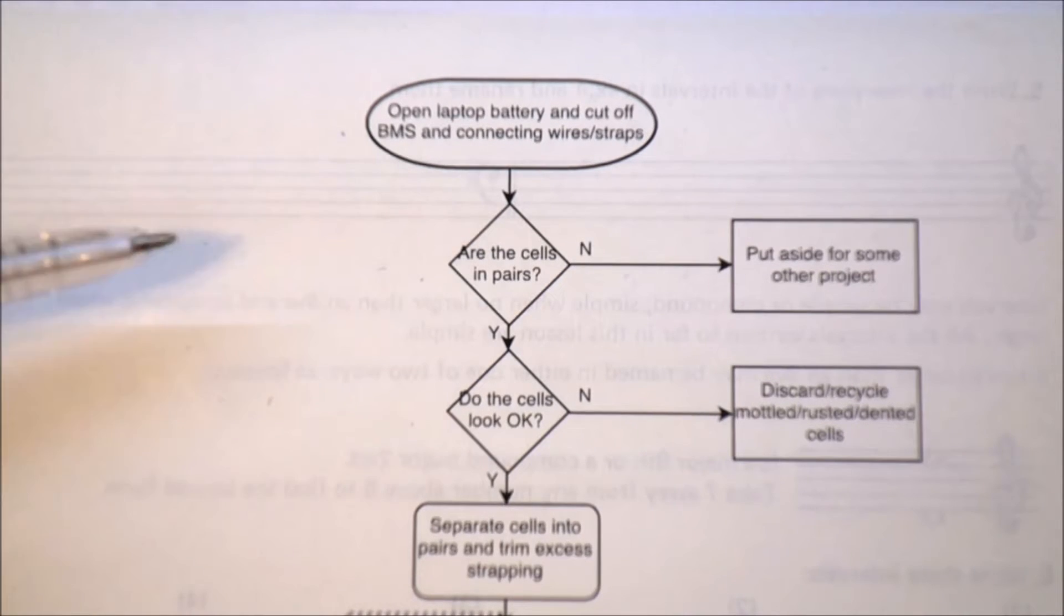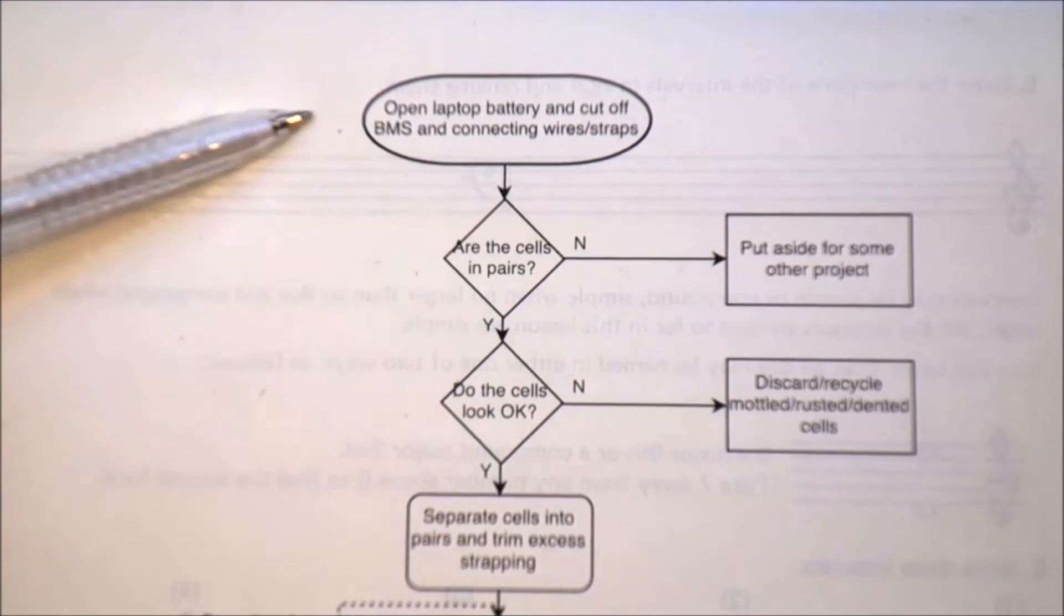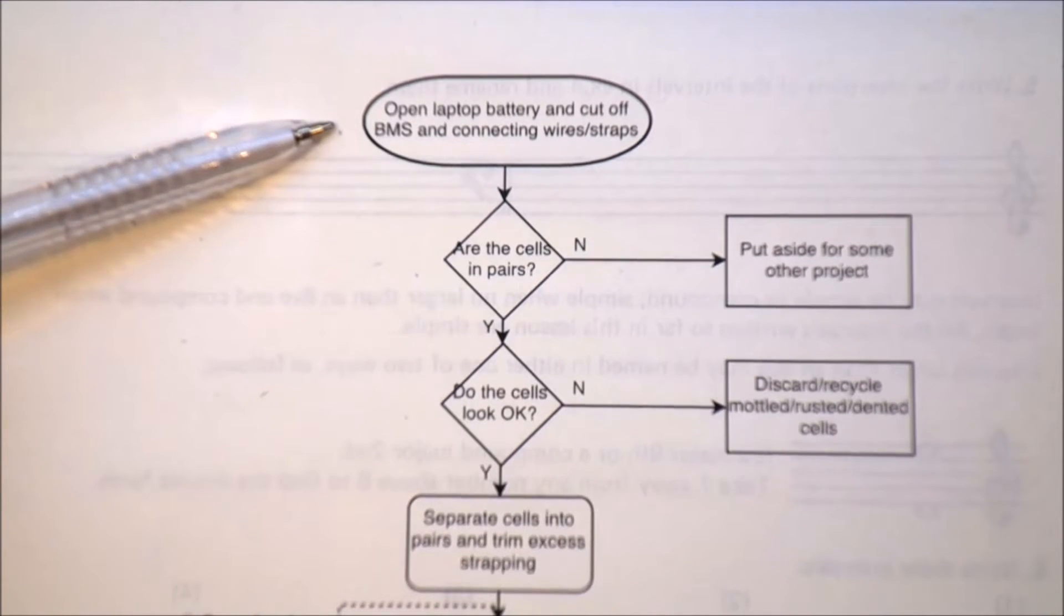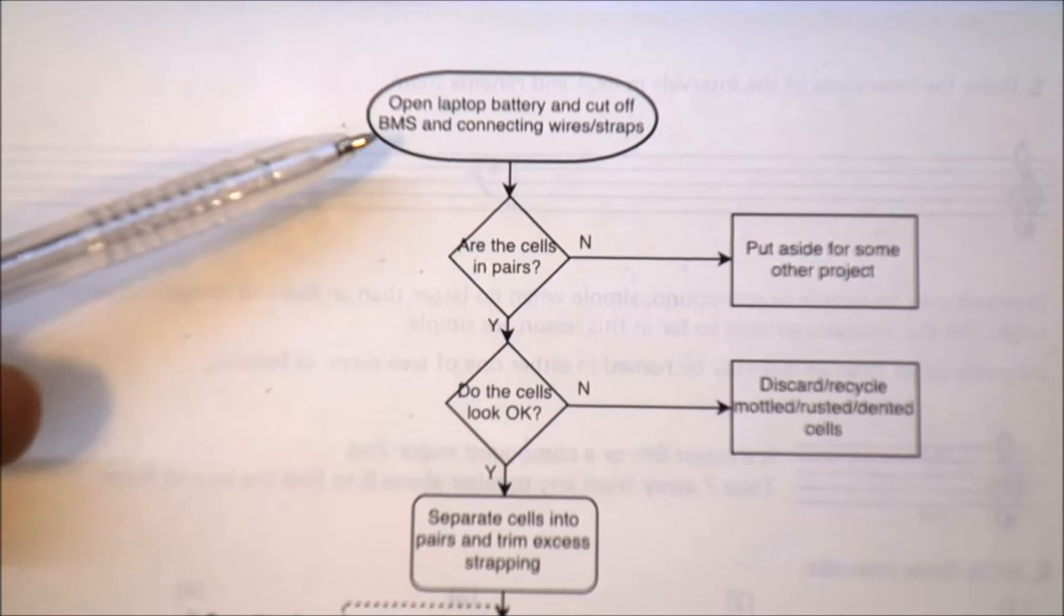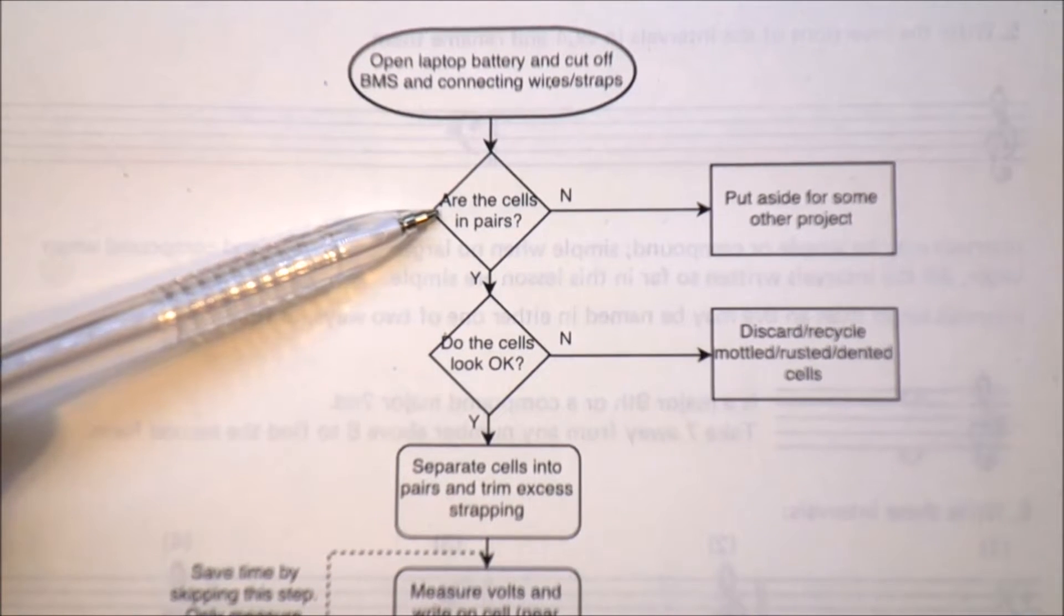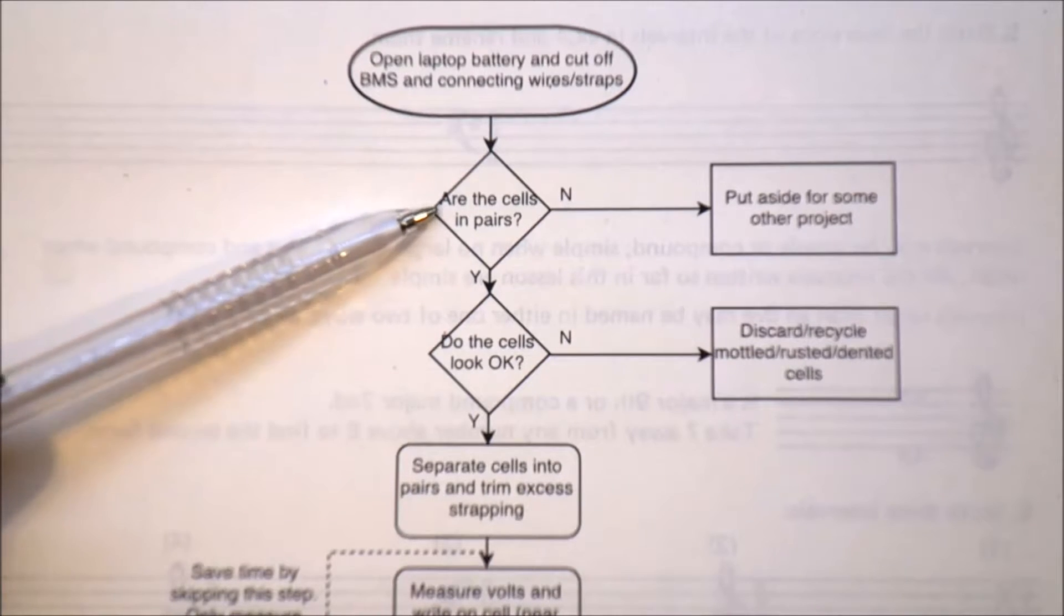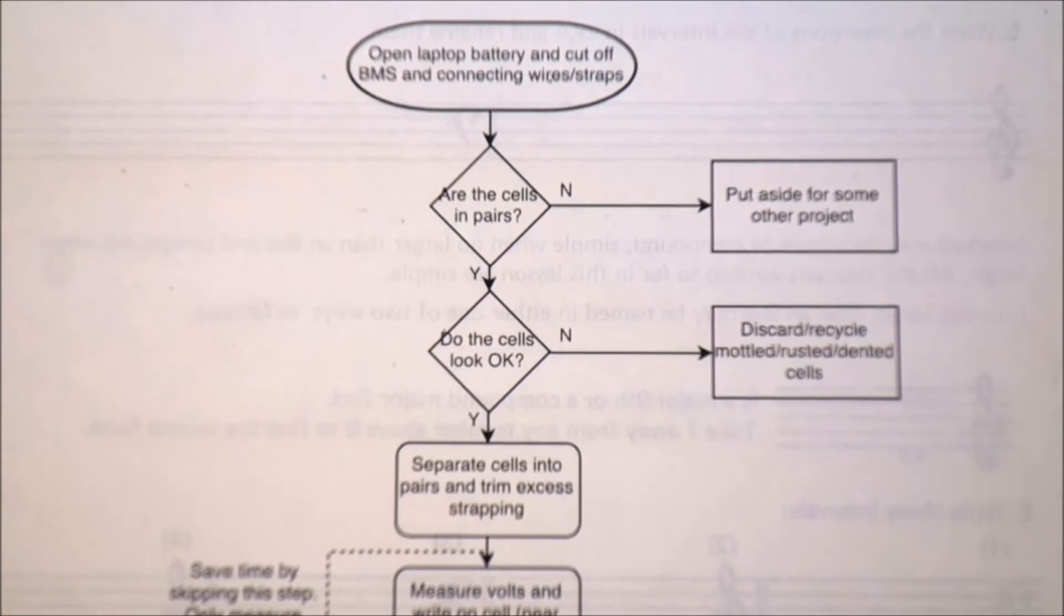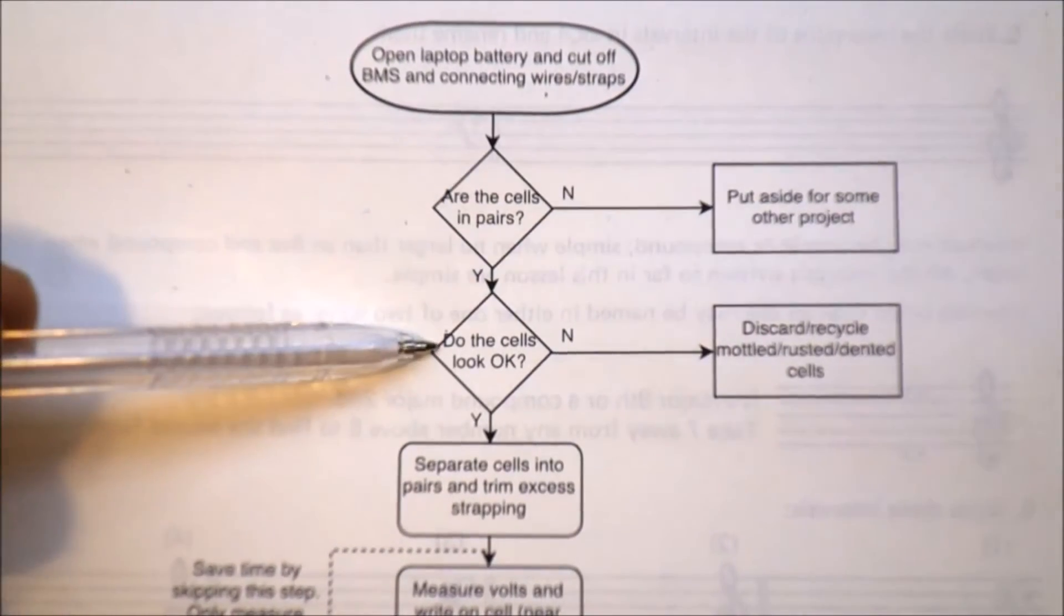And I'll just whizz through it. Step 1, open the batteries and cut off the BMS and the connecting wires. And then we come to a question: are the cells in pairs? So if they are not, I put the whole battery aside and leave it until some later time.